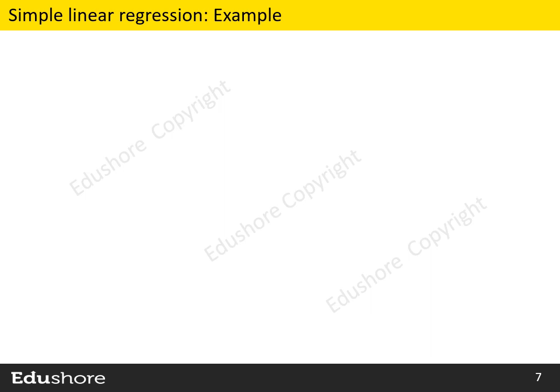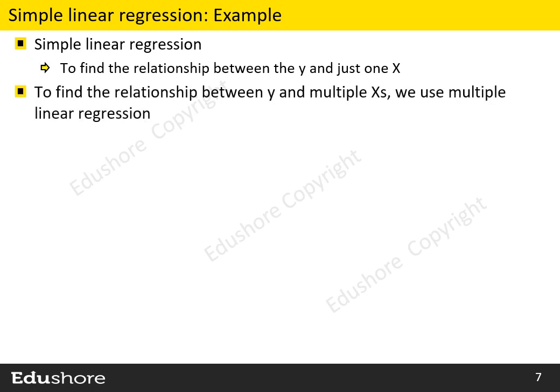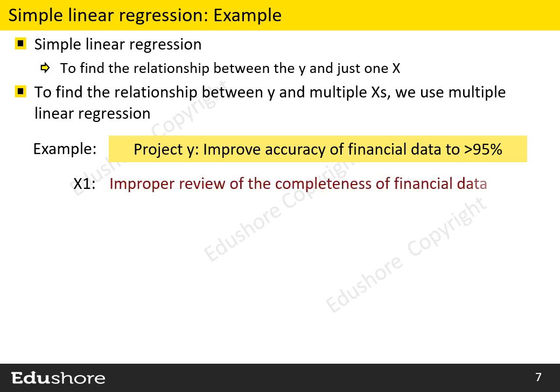Let us look at Simple Linear Regression. We use Simple Linear Regression to find the relationship between Y and just one X. To find the relationship between Y and multiple X's, we use Multiple Linear Regression. Let us say our Project Y is to improve accuracy of financial data to a minimum of 95%. During the Analyze Phase of the project, we found out that one of the root causes is improper review of the completeness of financial data, and since the review is not proper, it is impacting the overall accuracy of financial data.